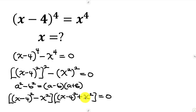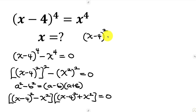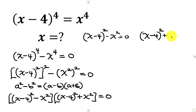When we have two things multiplying to give 0, that means it is either one of them is 0. So it is either what we have here — x minus 4, all raised to power 2, minus x squared — is equal to 0. We're going to be solving these one after the other.